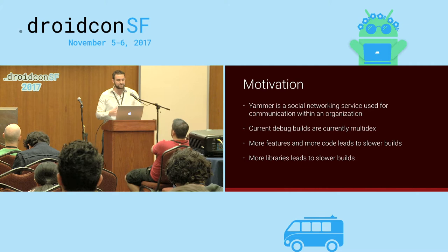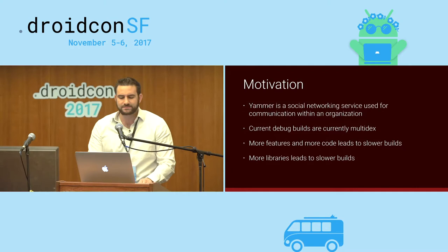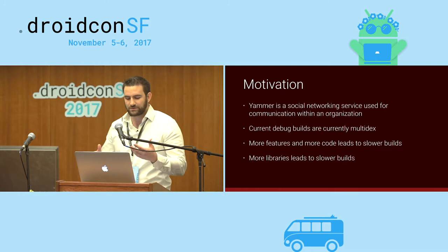Our current debug builds are multi-dex. The more features we write, the more code we add, it slows down our builds. Our libraries also get bigger over time, such as AppCompat, which also slows down our builds.